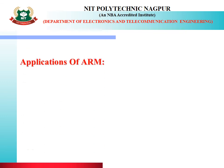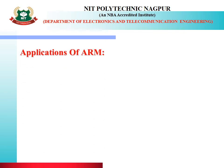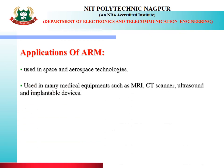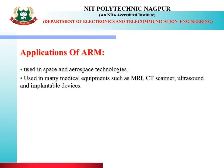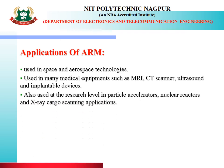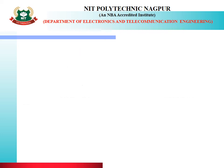What are the applications of ARM? ARM is mainly used in space and aerospace technology. It is used in medical equipment such as MRI, CT scanner, ultrasound, and implantable devices. Also used at the research level in particle accelerators, nuclear reactors, and X-ray cargo inspection. These are all the applications of the different controllers.